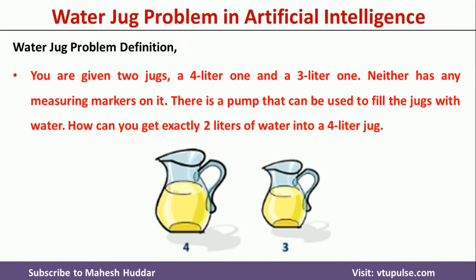The problem definition of the water jug problem is: you are given two jugs, one is 4 liters and another is 3 liters. Neither of these jugs has any measuring markers on it. There is a pump that can be used to fill the jugs with water. How can you get exactly 2 liters of water into the 4-liter jug? Because there is no marker on these two jugs, it is not possible to directly fill exactly 2 liters. So we need to apply artificial intelligence techniques to solve this problem.